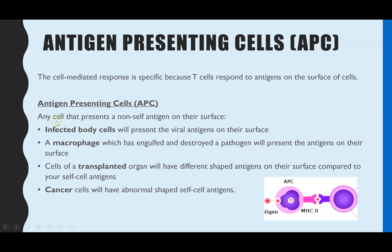APCs for short are any cell that presents a non-self antigen on their cell surface membrane. That could be an infected body cell which has a virus inside, which will then present the viral antigen on the cell membrane. Or it could be one of the phagocytes, such as a macrophage. After phagocytosis and engulfing and destroying a pathogen, it will then present the antigens on its surface. It could be cells of a transplanted organ, which will have different shaped antigens compared to your own self-cell antigens, or abnormal cells such as cancer cells, which will also have slightly different shaped self-cell antigens.